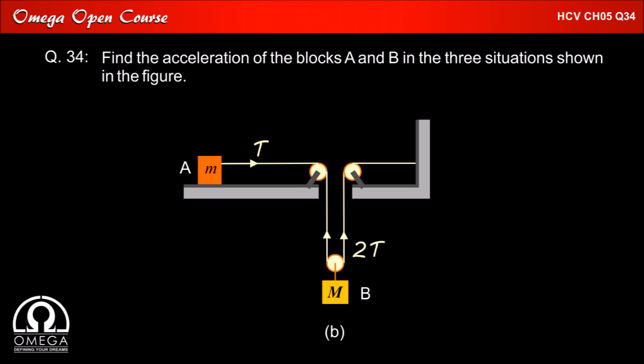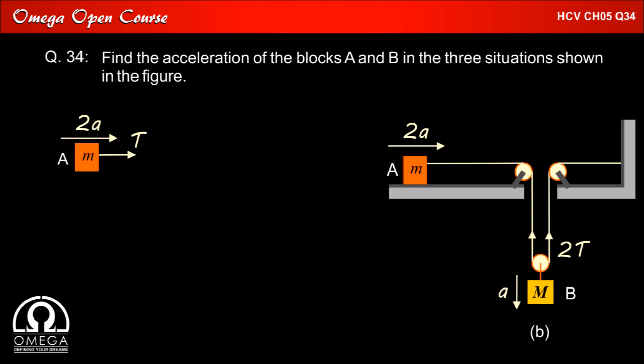In part B of the question, using similar logic as applied in part A, we conclude that if block A is pulled rightwards with tension T, the pulley will pull block B up with tension 2T. Also if we assume block B moves downward with acceleration A, block A will move towards the right with acceleration 2A. Drawing the free body diagram of A, the only force acting on it in the horizontal direction is tension T, which must provide its acceleration 2A. Therefore T must be equal to 2MA.